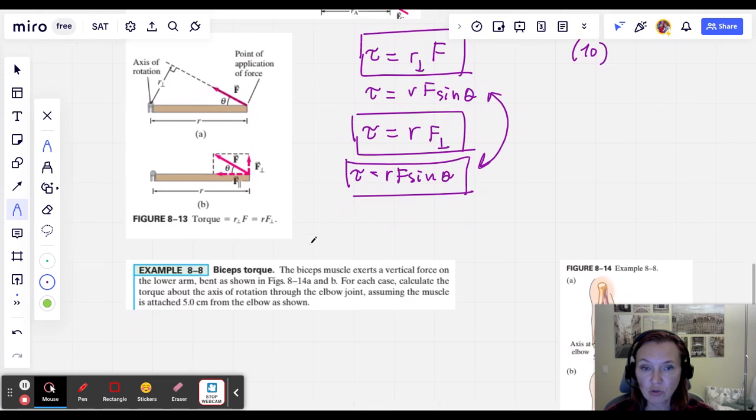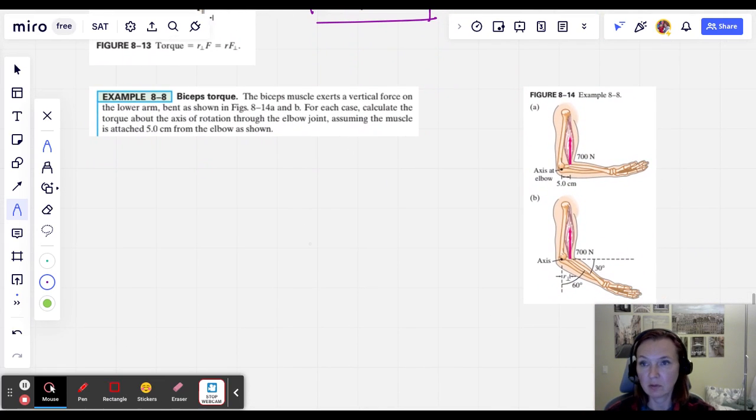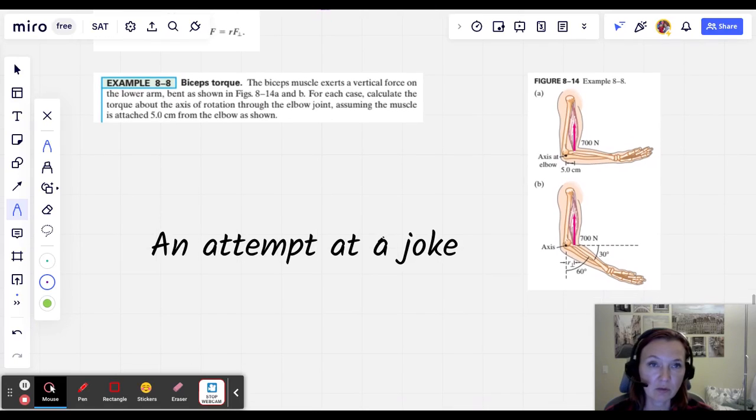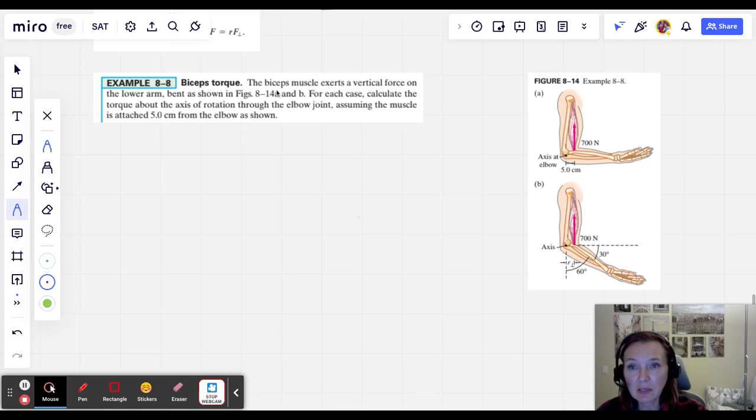So now let's apply this knowledge to an example about the bicep. So we are going to be working out, not our brain muscle, not the bicep muscle, but the problem is about bicep muscle. The biceps muscle exerts vertical force on the lower arm, bent as shown in this figure. So bent at 90 degrees and bent at 120 degrees, as shown here. For each case, we need to calculate the torque about the axis of rotation through the elbow joint.